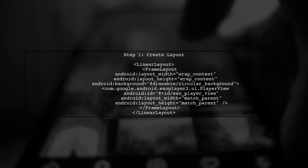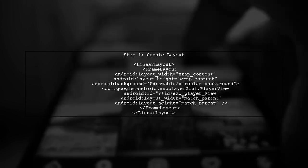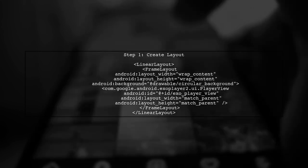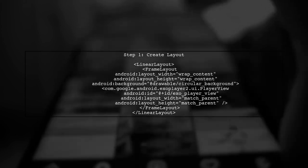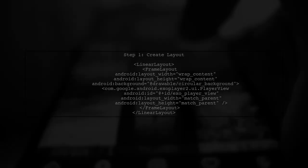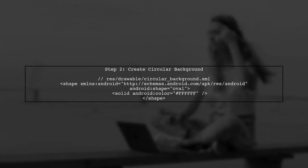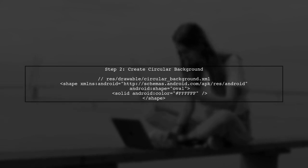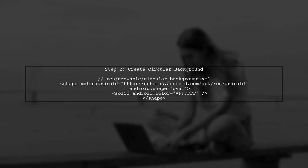To display an ExoPlayer view inside a circular shape, we need to use a combination of layout techniques. First, let's create a layout file for our player. Next, we need to create a drawable resource for the circular background. This will ensure that our ExoPlayer view is clipped to a circular shape.